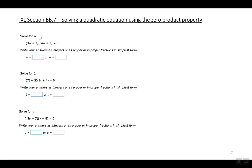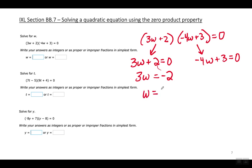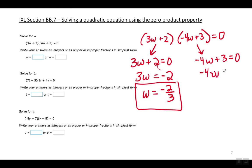Three more examples. First: three W plus two times negative four W plus three equals zero. Set each factor equal to zero and solve for W. Move the two to the right making it negative — three W equals negative two, divide by three — W equals negative two over three. Over here, move the three to the right making it negative, then divide by negative four. A negative divided by a negative equals a positive, so W equals positive three over four.